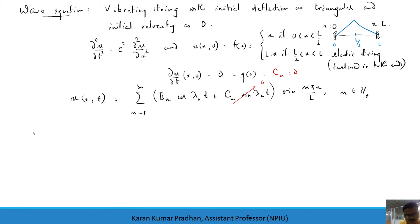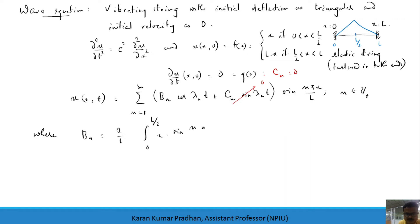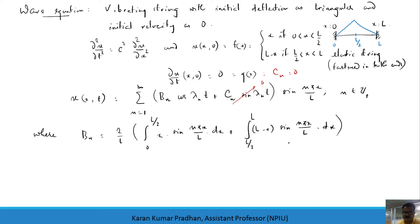b_n is given by (2/L) times the integral of f(x)·sin(nπx/L) dx. Since f(x) is piecewise, we split it into two integrals: from 0 to L/2 of x·sin(nπx/L) dx, plus from L/2 to L of (L − x)·sin(nπx/L) dx. We will use integration by parts for both integrals.